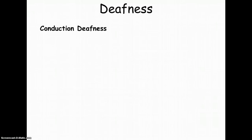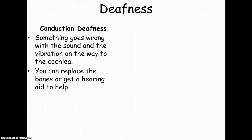Now you're probably curious about deafness — how it is that people lose the ability to hear, and what kinds of deafness exist. First there's conduction deafness, and this is where there are problems with the actual mechanical system that conducts the sound waves to the cochlea. Something goes wrong with the sound and the vibration on the way to the cochlea. This is actually fairly easy to help — you might have to replace the actual bones in the ear, or you get a hearing aid.